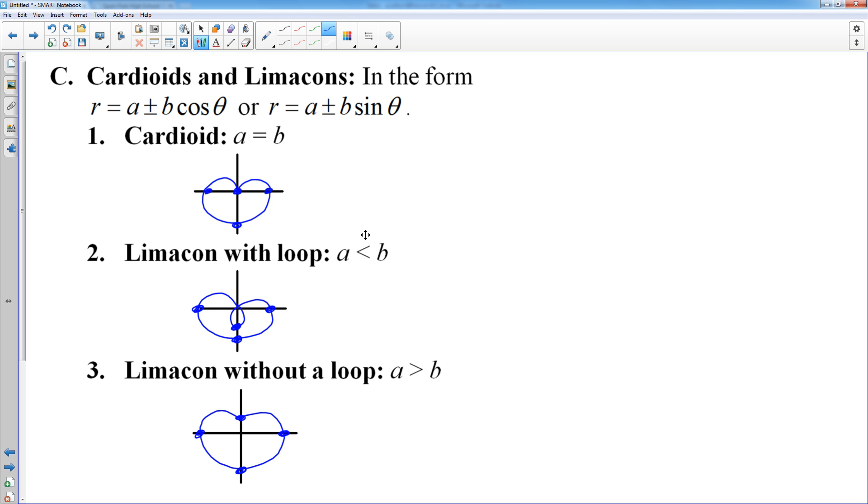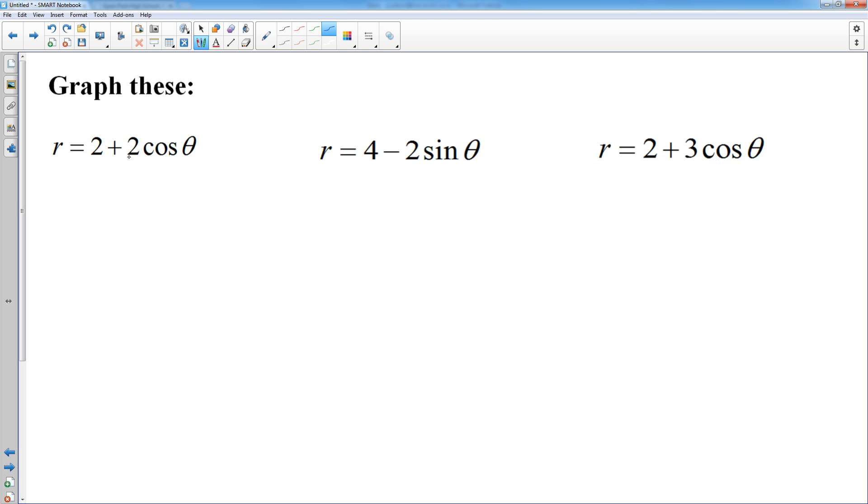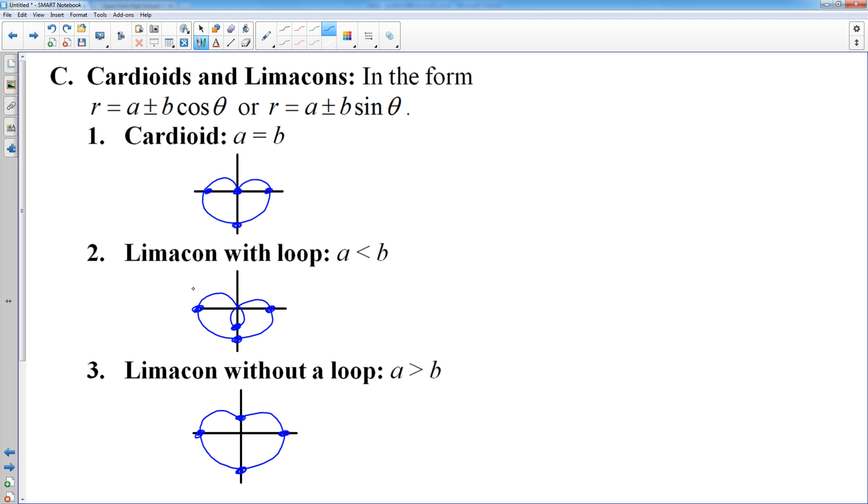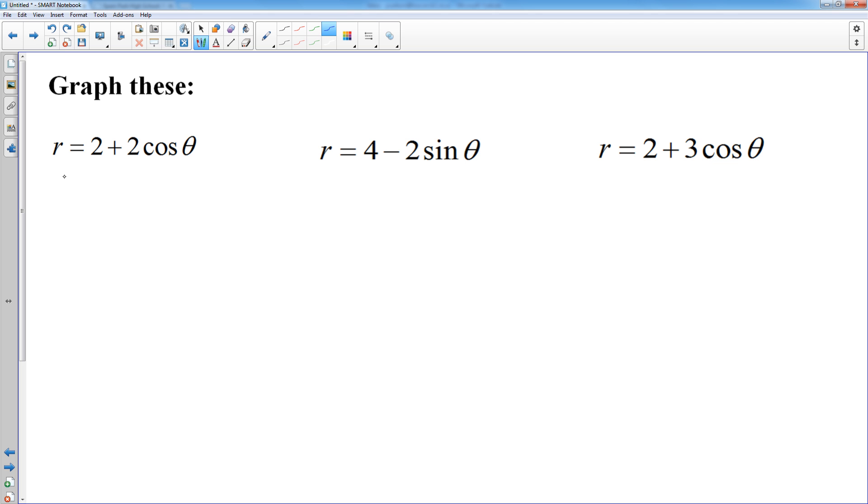I'm very bad at memorizing these rules about a being less than b or greater than b and all that. So I'm going to show you how I do this. Let's start with 2 plus 2 cosine theta. The way I graph these is I remember the three general shapes and I remember the orientation of these four points. And what I'll do is I will actually make an r theta table. And I plug in to this r theta table the four sexy angles. Zero degrees, 90 degrees, 180 degrees, and 270 degrees. And 360 is the same as zero.